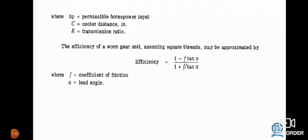The efficiency of the worm gear unit may be approximately efficiency = (1 - F tan α) / (1 + F / tan α), where F = coefficient of friction, α = lead angle.